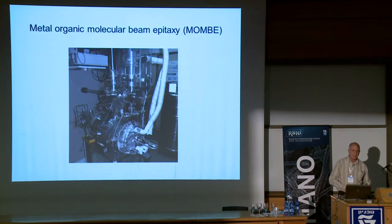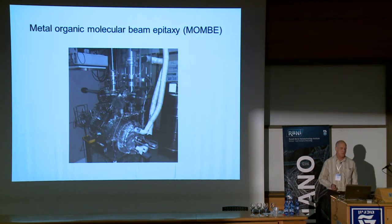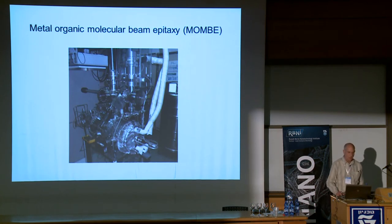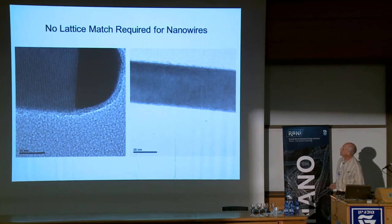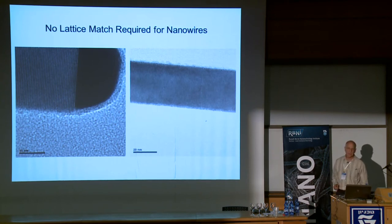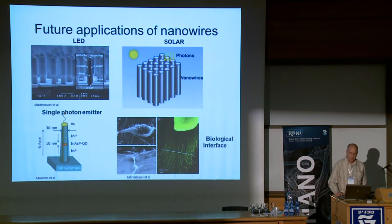This is the crystal growth machine we are using. It's metallo-organic molecular beam epitaxy - a combination of MOCVD and MBE. It works very nicely for us for many years to grow layers. We can see a nanowire here with nice atomic resolution and no dislocations along an indium phosphide nanowire. This is the gold catalyst.